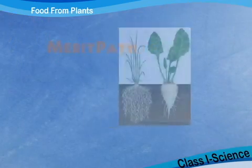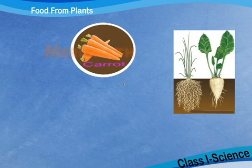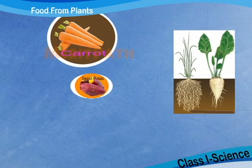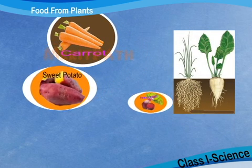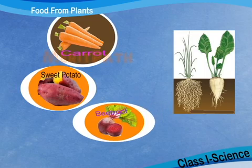Some vegetables are roots. Carrot, sweet potato and beetroot are the various roots that we eat.